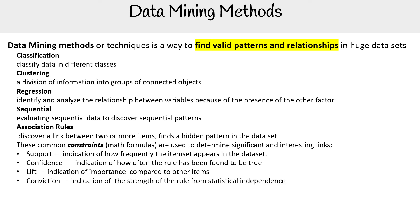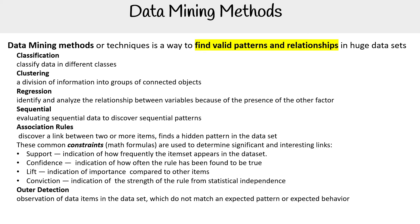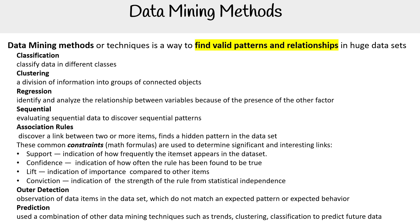We have lift, an indication of importance compared to other items, and conviction, an indication of the strength of the rule from statistical independence. For outlier detection, we have observation of data items in the data set which do not match an expected pattern or expected behavior. We have prediction, which uses a combination of data mining techniques such as trends, clustering, and classification to predict future data.